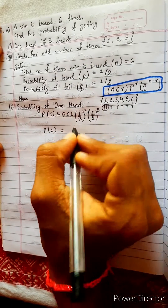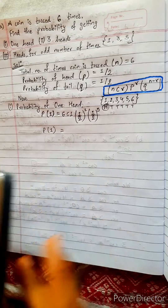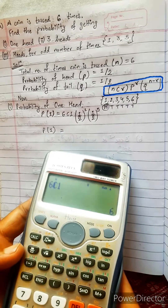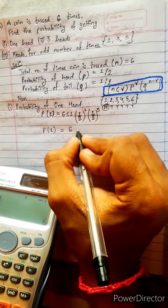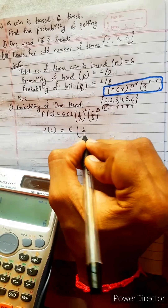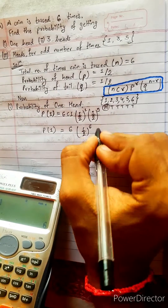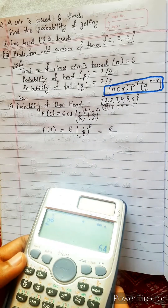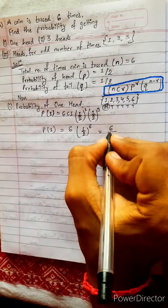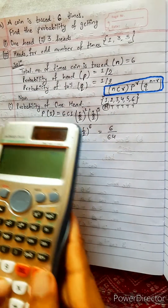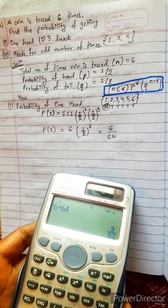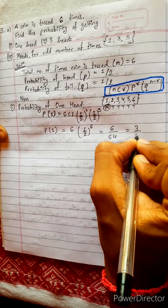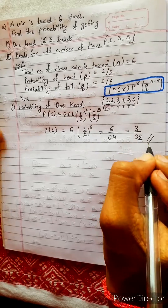So, probability of one head. Let's directly use a calculator — don't do such a long process. Six C one — how much is this? It is six. And this is total: one by two power five plus one, which is six. So six divided by two power six, which is sixty-four. Six by sixty-four equals three by thirty-two. One answer we got.